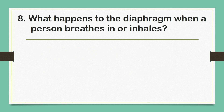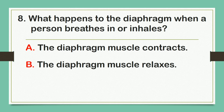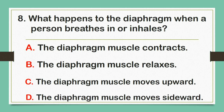What happens to the diaphragm when a person breathes in or inhales? A. The diaphragm muscle contracts. B. The diaphragm muscle relaxes. C. The diaphragm muscle moves upward. Or D. The diaphragm muscle moves sideward. The correct answer is letter A: The diaphragm muscle contracts.